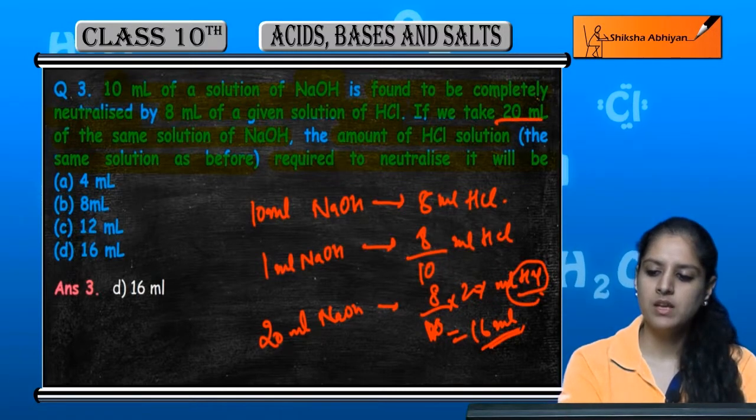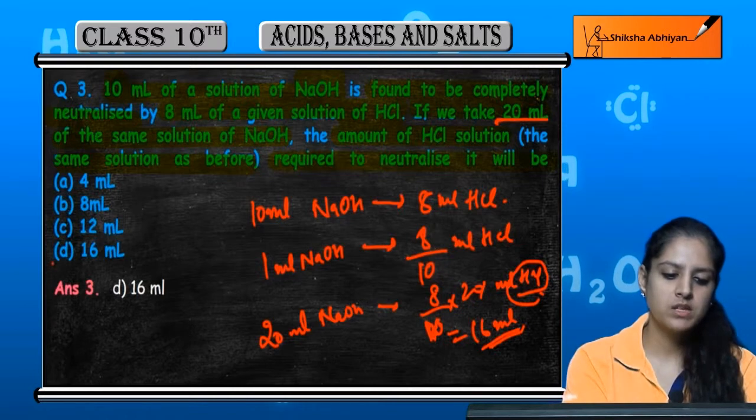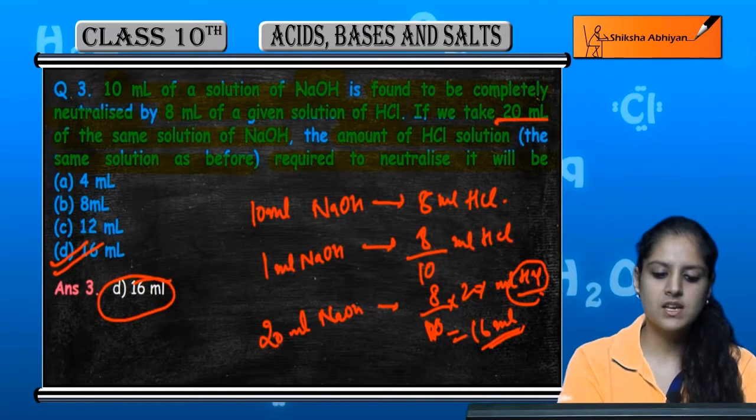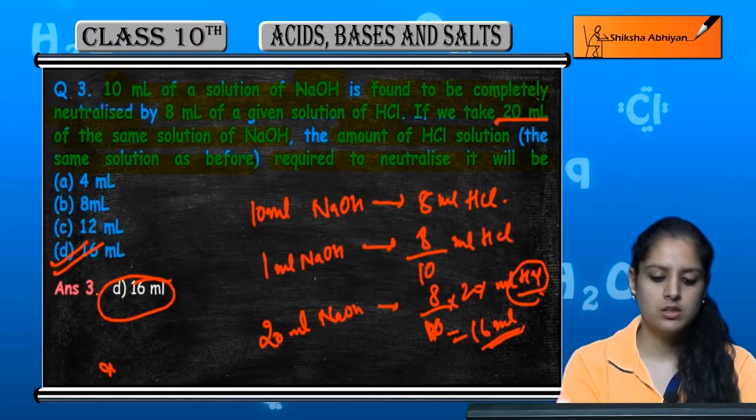So if we use 20 ml of NaOH solution, then it is neutralized by 16 ml of HCl.